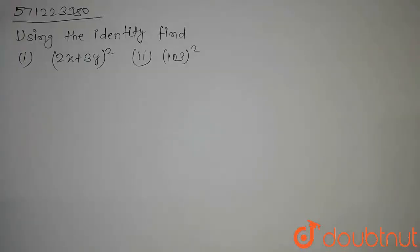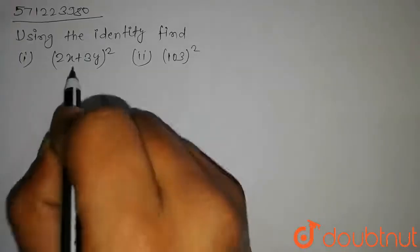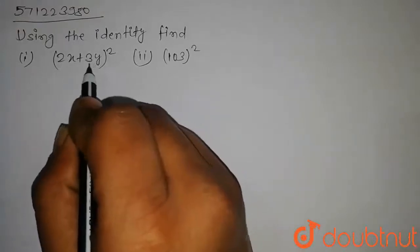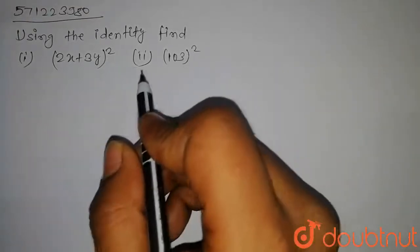Hello students, in this question we have to find (2x + 3y)² whole square and 103 square by using the identity.